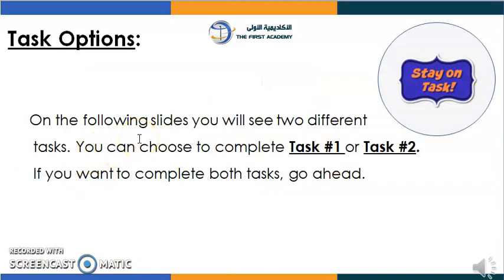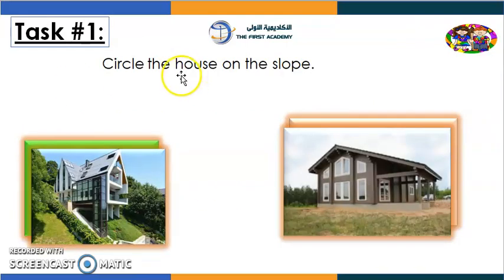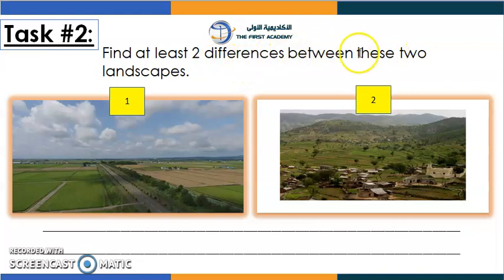On the following slides, you will see two different things to do. You can choose to complete task number one or task number two — or both if you want. Task one: circle the house on the slope — slope means high area. Task two: find at least two differences between the two landscapes. In picture number one it's plain and flat, while in picture number two it has hills and mountains. What do we call the high areas? Slopes or slants — excellent.